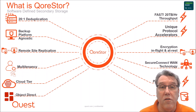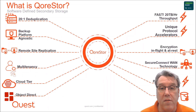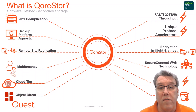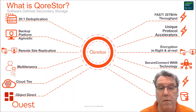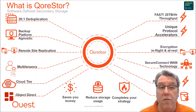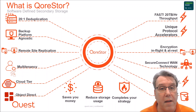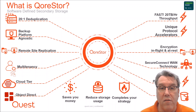It also includes a new technology called Object Direct, which we'll look at a bit closer later in the presentation. We also have an archive tier as well, which can leverage longer term cold storage in the cloud. So overall the idea of CoreStore is that it saves you money, reduces your storage costs, and also helps to complete your backup strategies, getting data off-site with replication and tiering solutions.